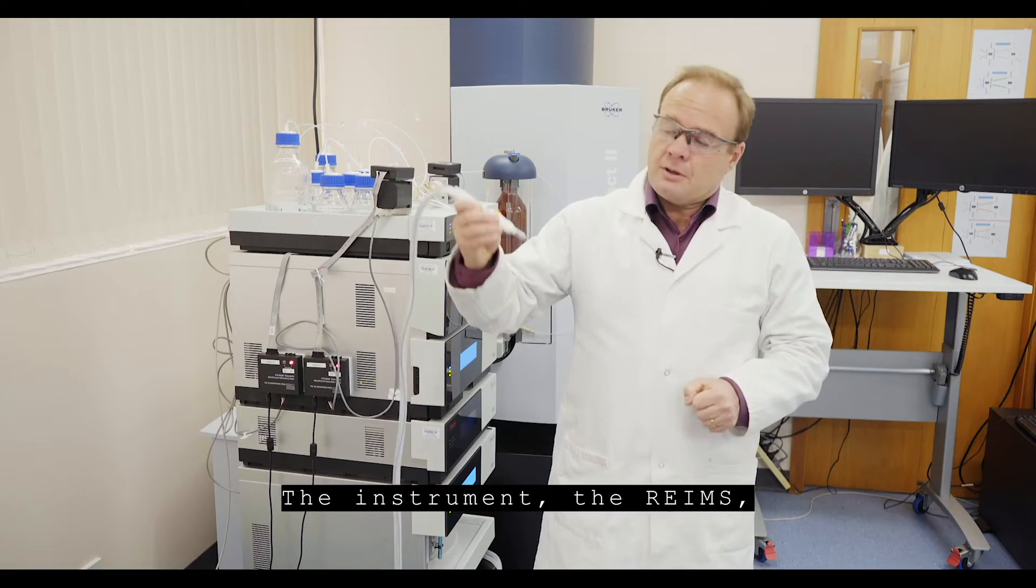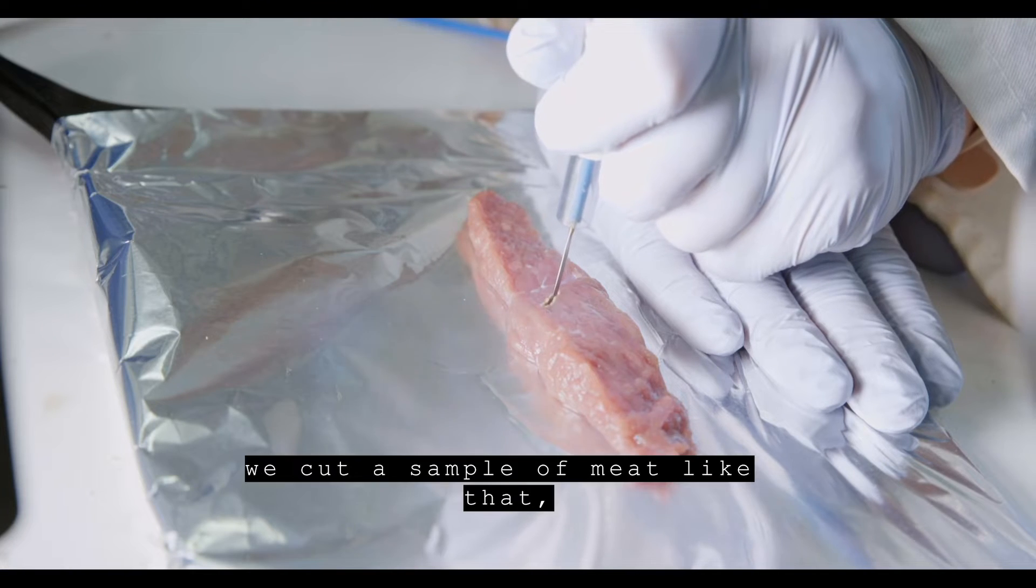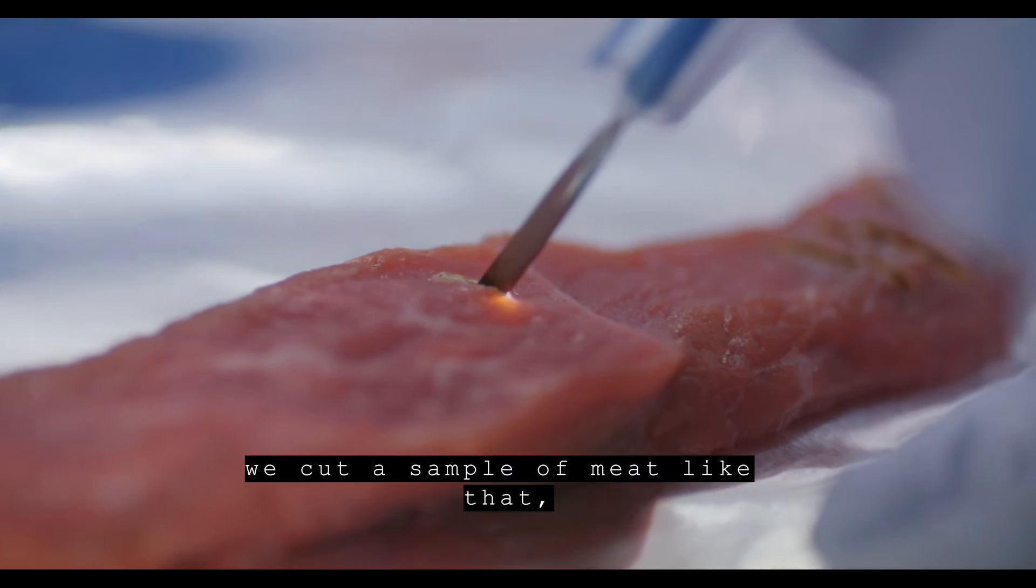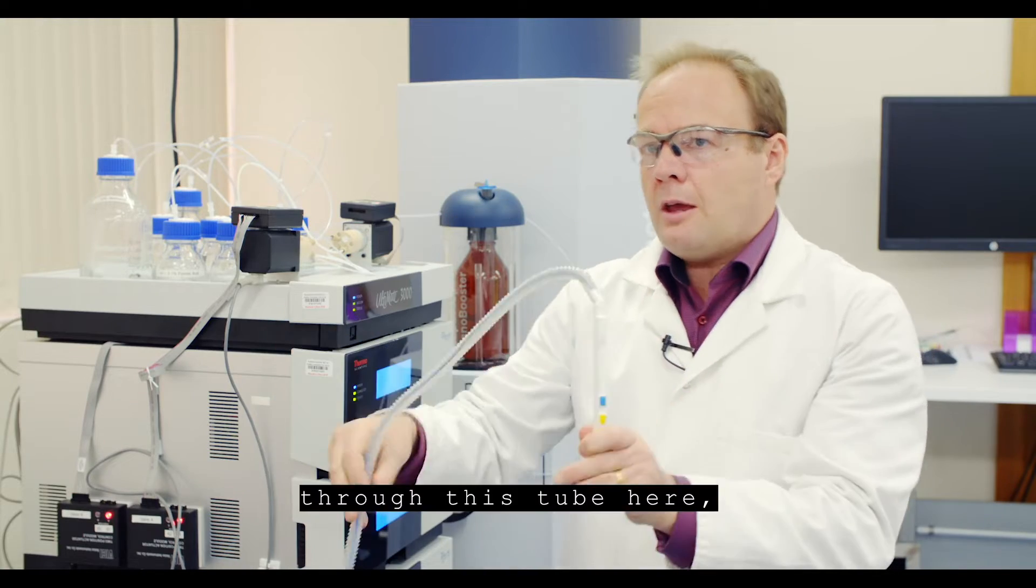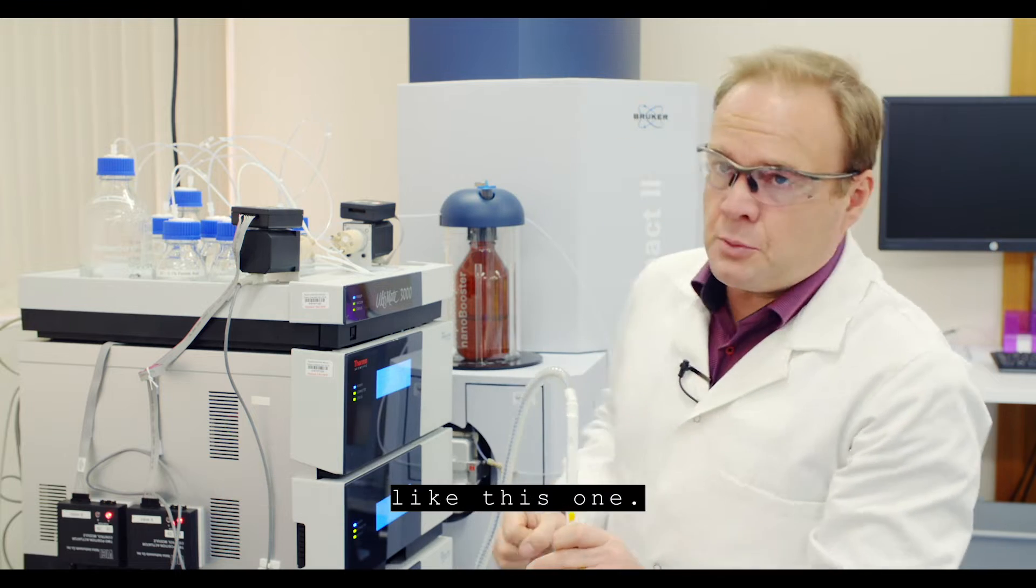The instrument, the REIMS, we have this surgeon's knife here. We cut a sample of meat like that, creates this vapour, and the vapour goes up the tube, through this tube here, into a mass spectrometer, a bit like this one.